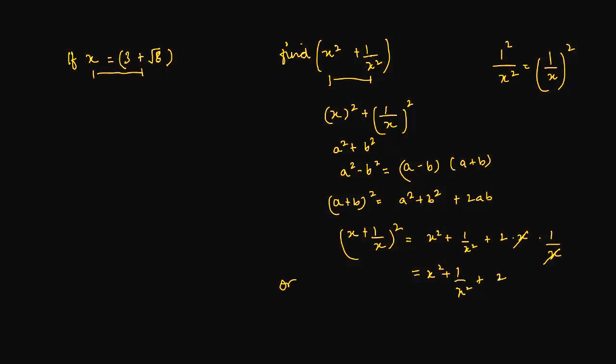Or if you just move this 2 to the other side of the equation, you get this as x plus 1 upon x whole square minus 2 is equal to x square plus 1 upon x square, which is what we also have here.